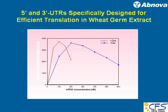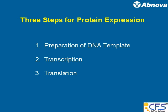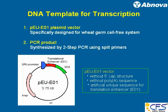Protein expression is done in three steps — it's an uncoupled reaction. We first prepare DNA templates, then move to transcription, and then use the transcript for translation. We use two kinds of DNA templates: one is a plasmid-based vector called PEU-E0-1, and another, especially for high-throughput screening, is a PCR product. The PEU-E0-1 vector has an SP6 promoter, a translation enhancer (an artificial sequence), and a multi-cloning site.